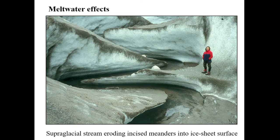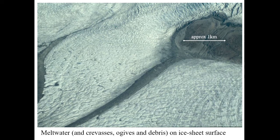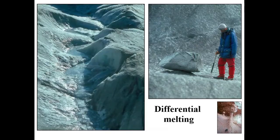We can also think about the effects of meltwater at the glacier surface. A glacier surface, like any landscape, can be subject to erosion, transport, and deposition — not only mechanical erosion of the ice but also thermal erosion if the water is warmer than the ice. A lot of the glacier surface in the ablation zone is affected by meltwater flow, and in this image near Kangerlussuaq, West Greenland, you can see crevasses, ogives, and lots of meltwater on the glacier surface.